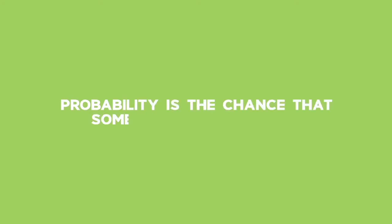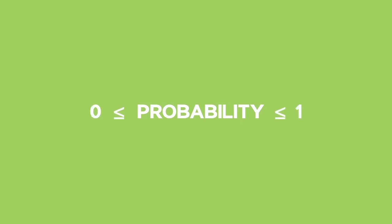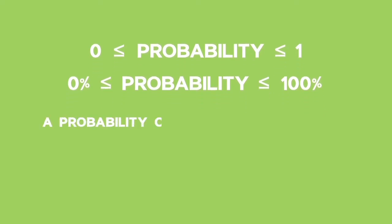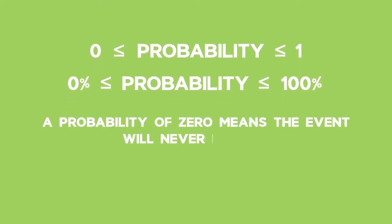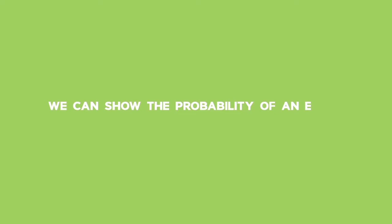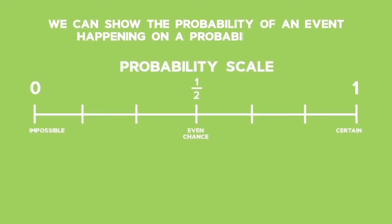Probability is the chance that some event will happen. It is given as a real number between an inclusive of 0 and 1, or as a percentage between an inclusive of 0% and 100%. A probability of 0 means the event will never happen, and a probability of 1 means that the event will always happen. We can show the probability of an event happening on a probability scale.